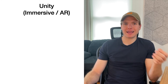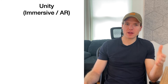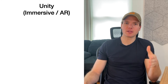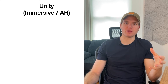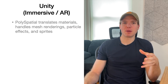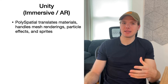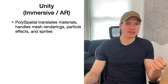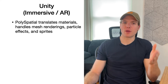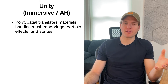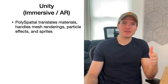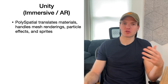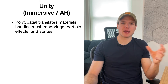Unity apps operating in the shared space and AR full space are rendered using RealityKit. This rendering process requires the translation of materials and shaders. Thankfully, Unity's Polyspatial technology handles most of the heavy lifting. Polyspatial handles the translation of materials, regular and skinned mesh renderings, particle effects and sprites. It even supports Unity's simulation features, letting you use mono behaviors, scriptable objects, and other standard tools.